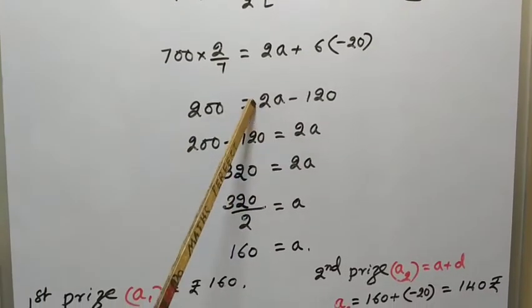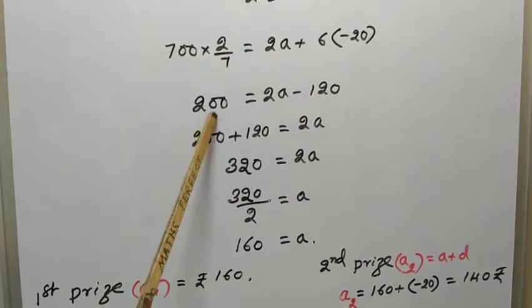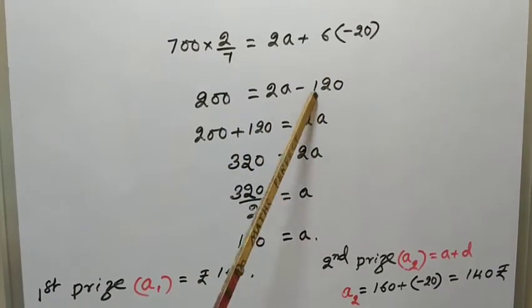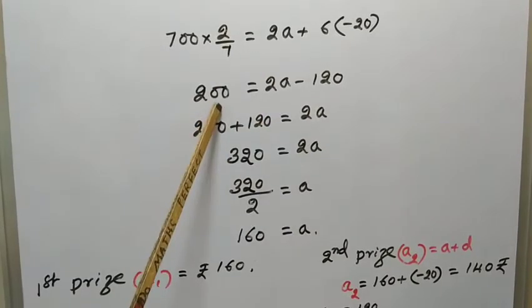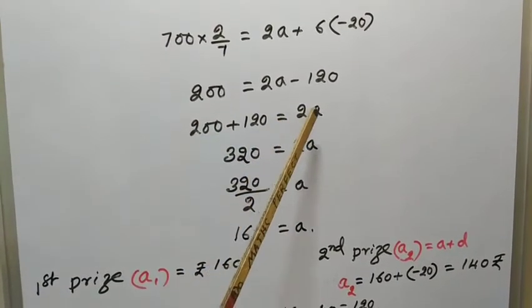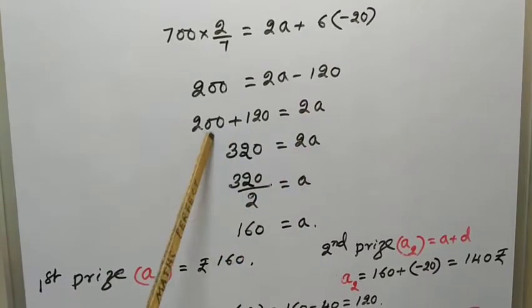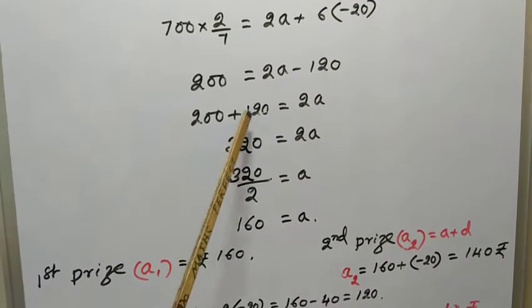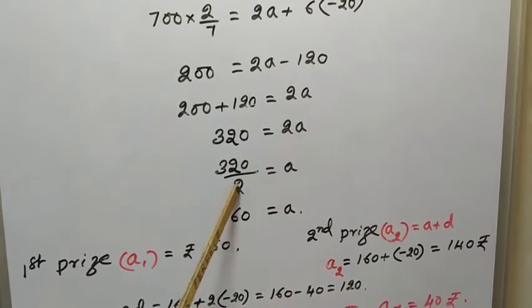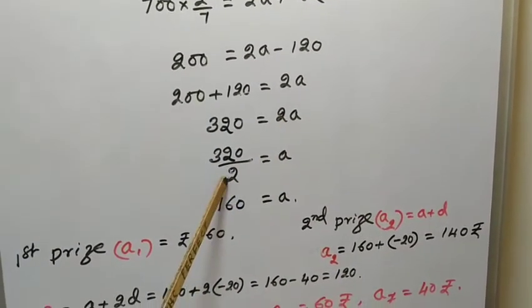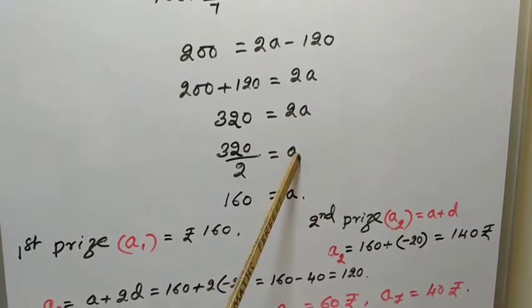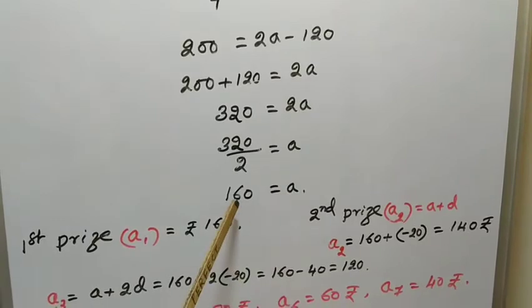Now in this equation, this is variable and these two are known quantities. So bring them to one side. Take this right-hand side minus 120 to left-hand side. That becomes 200 plus 120 equal to 2A. Cross multiply this, 2 comes to denominator. 320 divided by 2 equal to A. Therefore, A equal to 160.